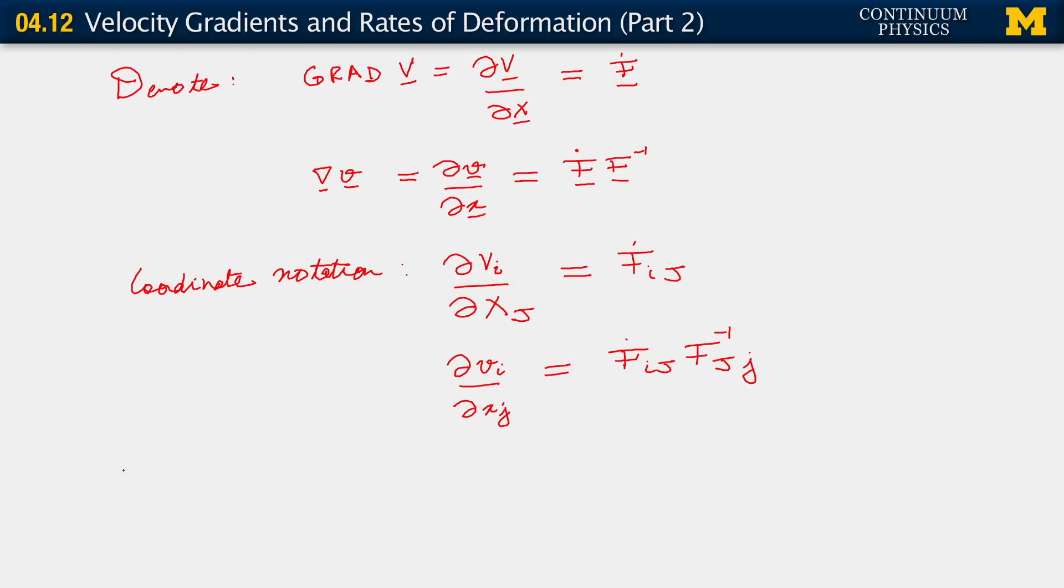Now, in general, neither of these velocity gradient tensors is symmetric. In general, they're both unsymmetric. So F-dot, which is this, and F-dot F-inverse, which is that, are unsymmetric.